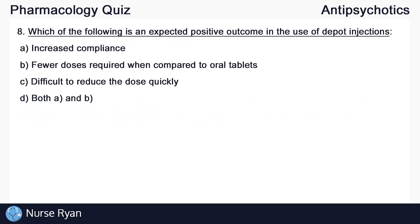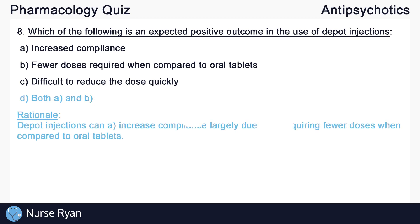Moving on to question number eight: which of the following is a possible positive outcome in the use of depot injections? The answer is D, both A and B are correct. Depot injections can increase compliance largely due to requiring fewer doses when compared to oral tablets.